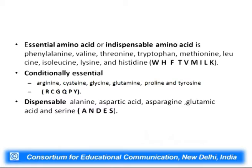Another way of characterizing amino acids is whether they are essential — meaning we must obtain them through nutritional intake — or whether we can form them in the body. Some essential or indispensable amino acids are phenylalanine, valine, threonine, tryptophan, methionine, leucine, isoleucine, lysine, and histidine. There is a small acronym to help remember the essential amino acids.